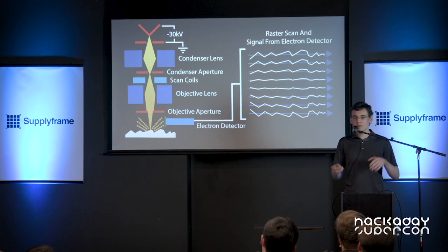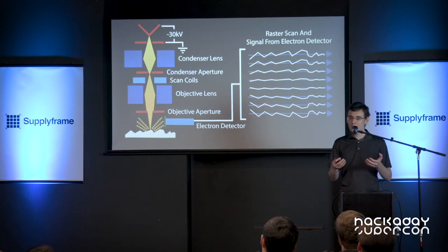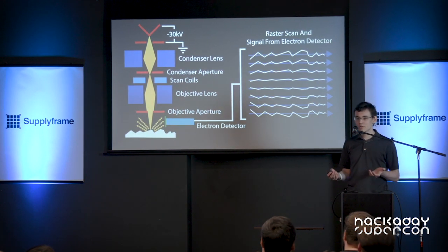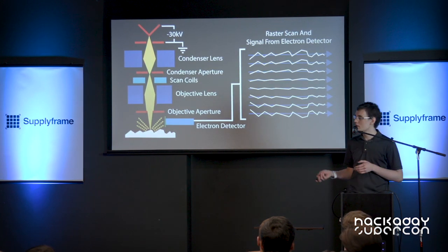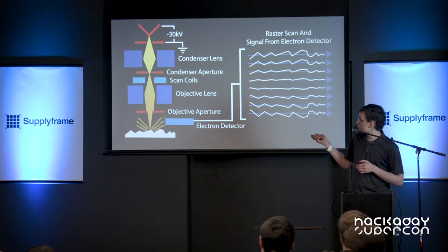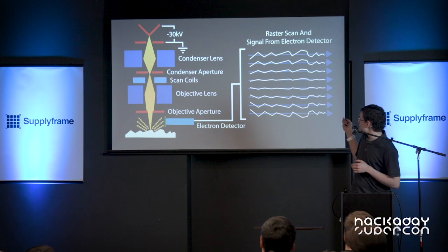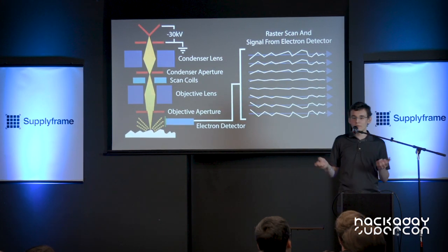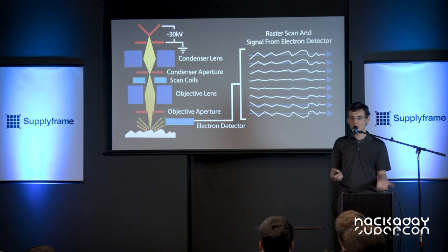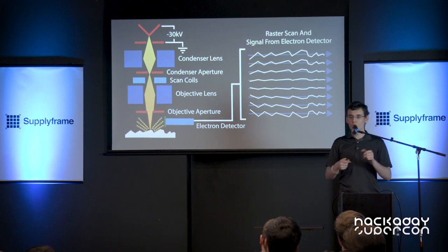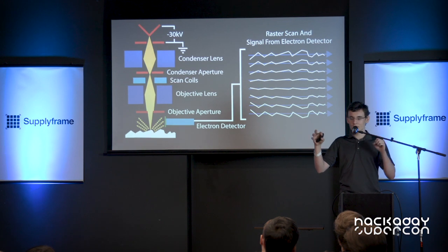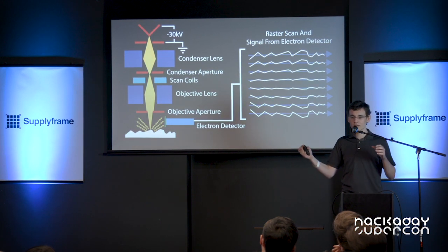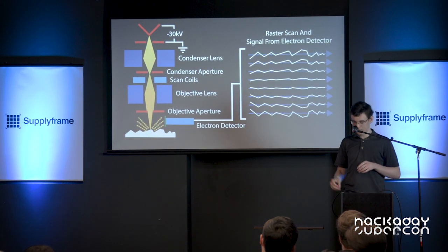Once the beam strikes the sample, some electrons are given off by the sample. An electron detector picks up those electrons and transmits them to the screen. Using the scan coils, we scan the beam in a raster pattern across the surface of the sample. At every point, we record how many electrons come back off the surface, correlate that to brightness, and make the beam brighter or less bright on the CRT — and we're left with an image.